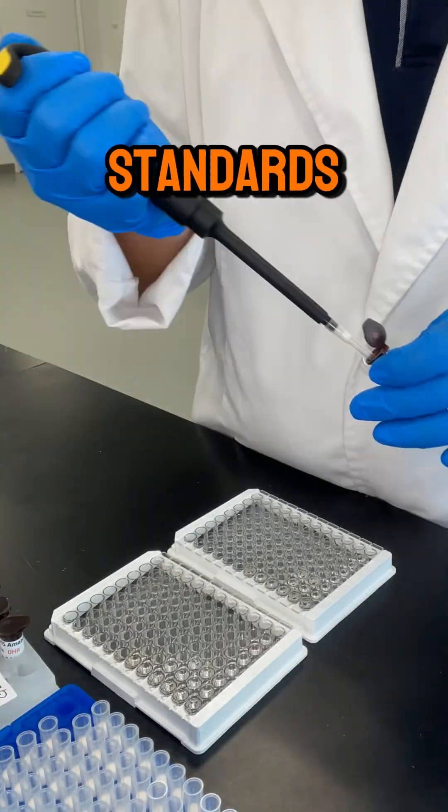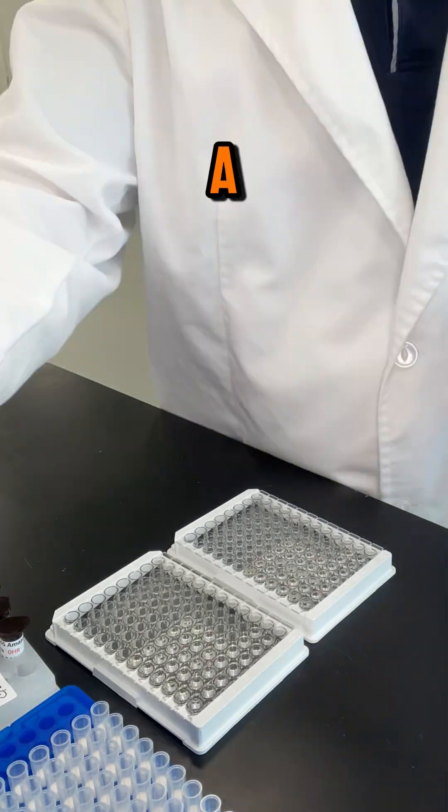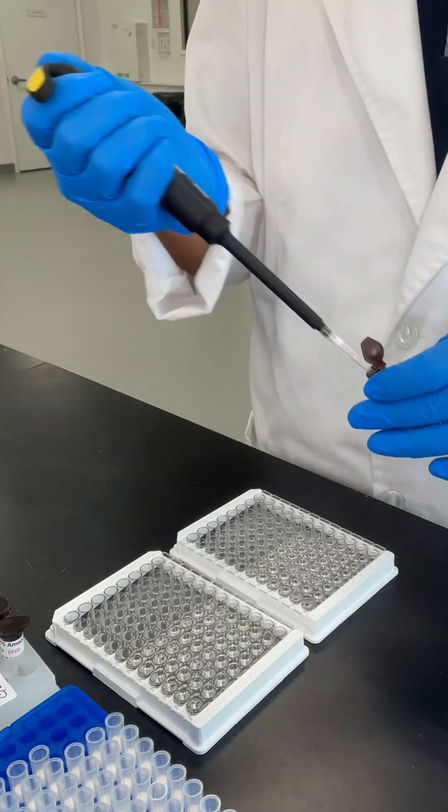Then we added our samples and standards to the 96-well plates. Each well comes pre-coated with antibody number 1. If our samples contain a specific protein, it will attach to the antibody in these wells.